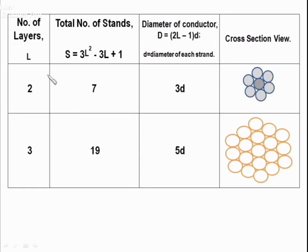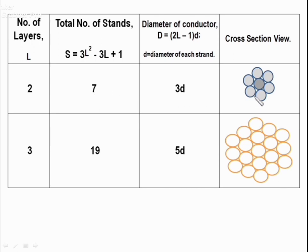In this table, L denotes number of layers. Total number of strands is denoted by S = 3L² − 3L + 1. Diameter is represented by D = (2L−1)×d, where d is the diameter of each strand. If number of layers is 2, you can have 7 total strands. If number of layers is 3, you can have 19 total strands — you can observe the cross-sectional view.